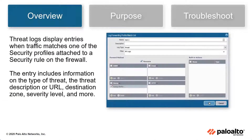Threat logs display entries when traffic matches one of the security profiles attached to a security rule on the firewall. The entry includes information on the type of threat, such as virus or spyware, the threat description or URL, destination zone, severity level, and more.